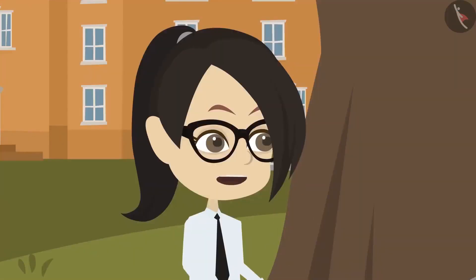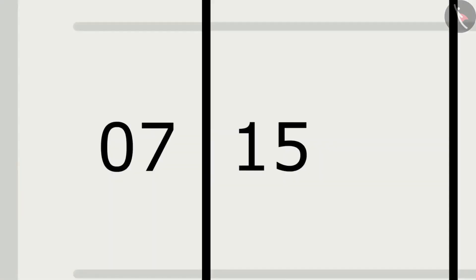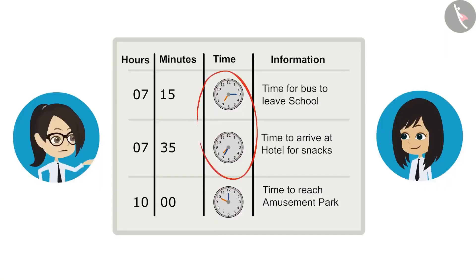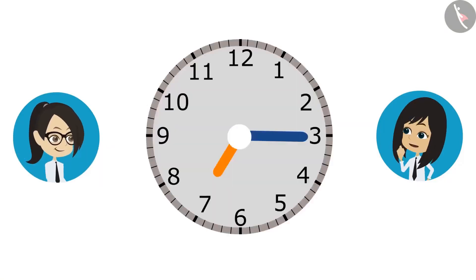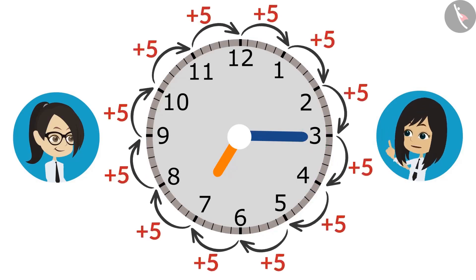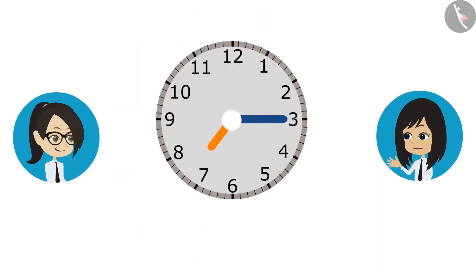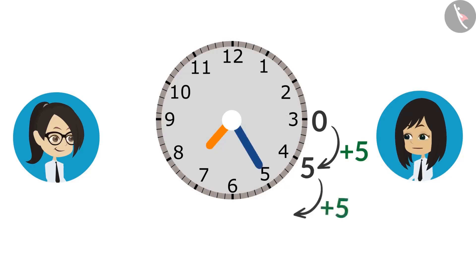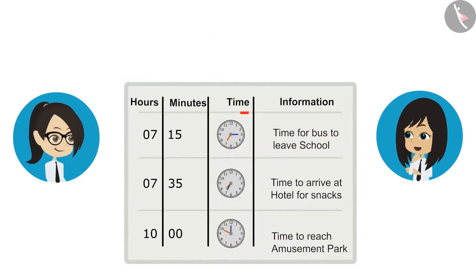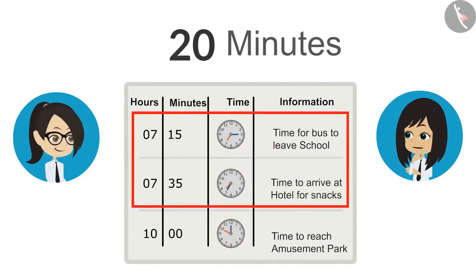Look at the minute hand when the time is 15 minutes past 7 o'clock — the minute hand is at 3. When it is 35 minutes past 7, the minute hand is at 7. The difference from one number to another number is 5 minutes, so we keep adding 5. It takes 5 minutes to reach 4, 10 minutes to reach 5, 15 minutes to reach 6, and 20 minutes to reach 7. This means the bus takes 20 minutes from school to the hotel.